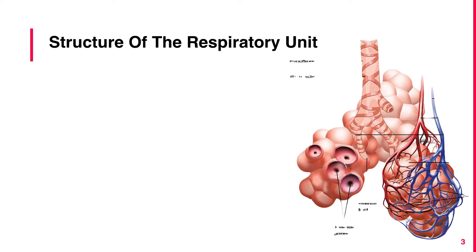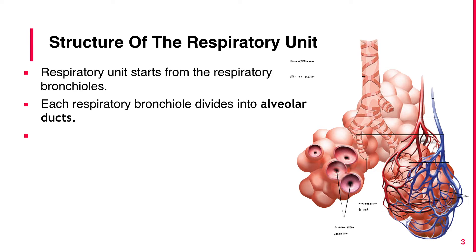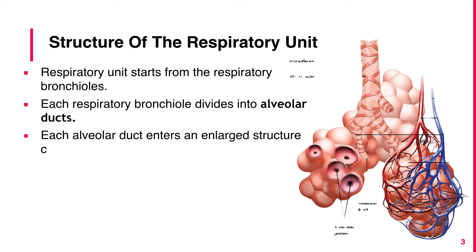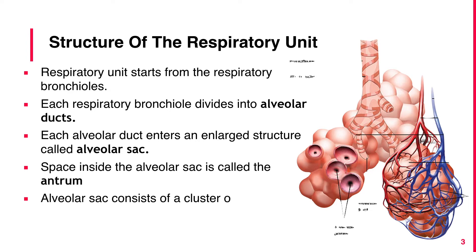Respiratory units start from the respiratory bronchioles. Each respiratory bronchiole divides into alveolar ducts. Each alveolar duct enters an enlarged structure called the alveolar sac. The space inside the alveolar sac is called the antrum. The alveolar sac consists of a cluster of alveoli.